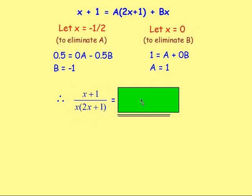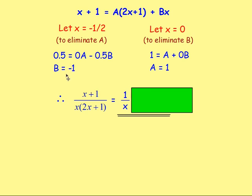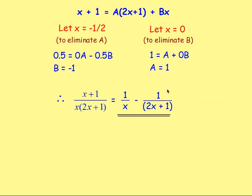We were asked to express this in partial fractions. a is 1, so it becomes 1 over x. b is negative 1, so we'd have negative 1 over (2x plus 1). Bringing the negative to the front, that goes to take away 1 over (2x plus 1). So that is it written in its partial fractions.